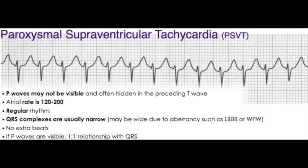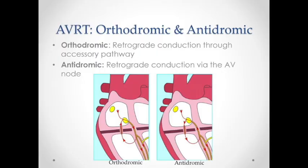PSVT — paroxysmal supraventricular tachycardia — includes any tachyarrhythmia originating above the ventricles from an atrial or AV nodal source. SVT is an umbrella term. Pathophysiology: re-entry circuits — AVNRT (AV nodal re-entry tachycardia) uses two pathways within the AV node (most common type), and AVRT (AV reciprocating tachycardia) uses one normal and one accessory pathway outside the AV node — includes Wolff-Parkinson-White and LGL syndrome.